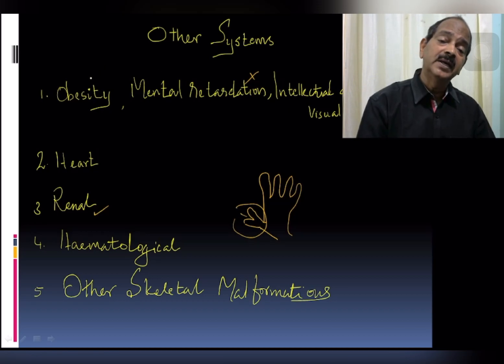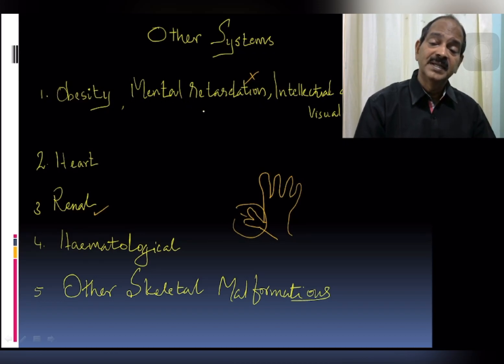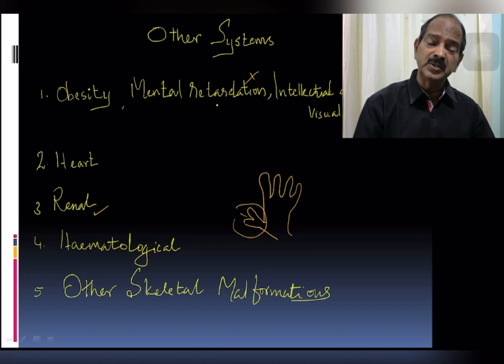You have to check for obesity with short stature — not tall and obese, but short and obese. There can also be renal malformation. This is Bardet-Biedl (or Laurence-Moon-Biedl) syndrome.